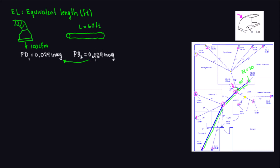Since the pressure drop is the same, we could say the length is equivalent to 60 feet. But wait — this is not a straight duct, so we cannot just call it 'length.' That's why we call it equivalent length, because it is not a straight duct.